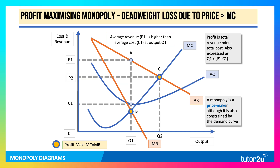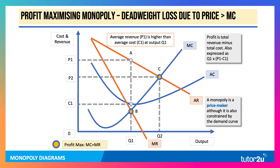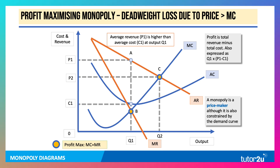Because the monopoly is charging a price well above marginal cost, the welfare loss is the area A, B, C on this diagram. If they were pricing at marginal cost, output would expand to Q2 and price would fall to P2.